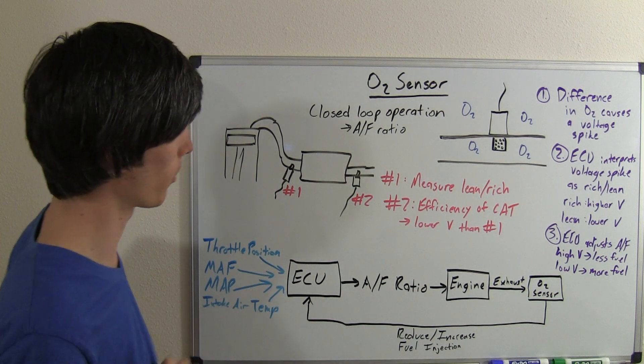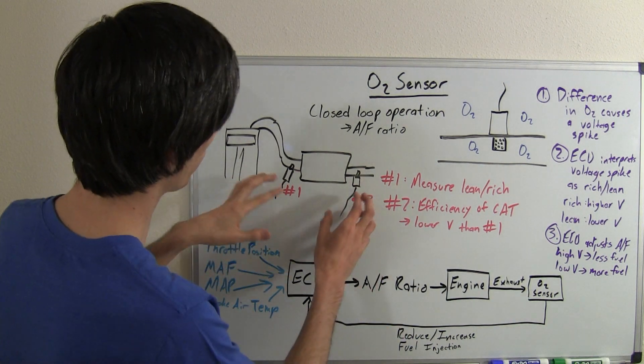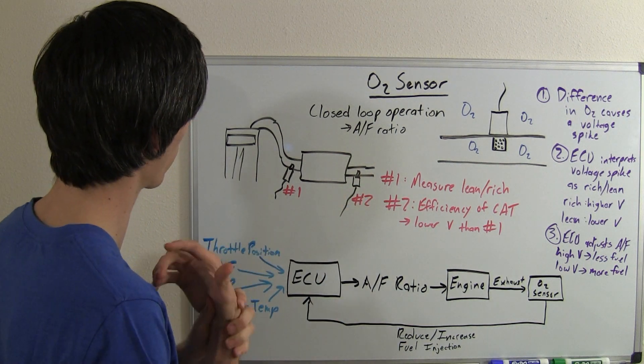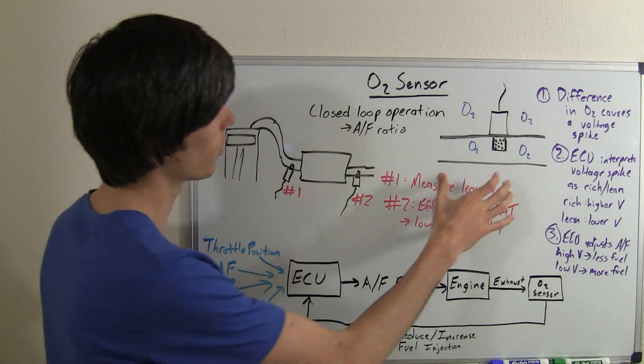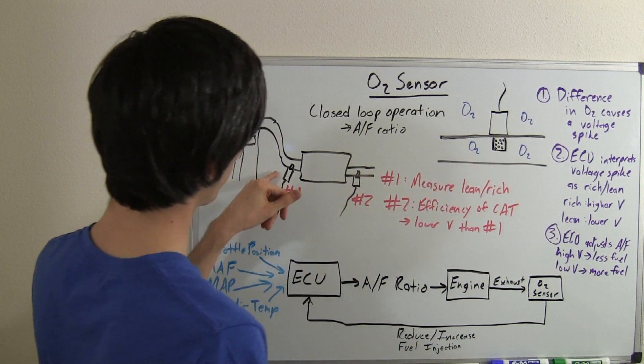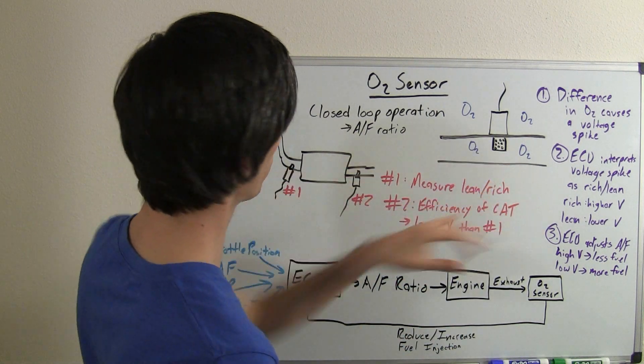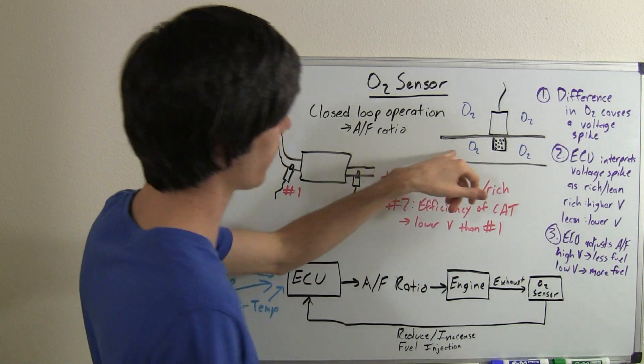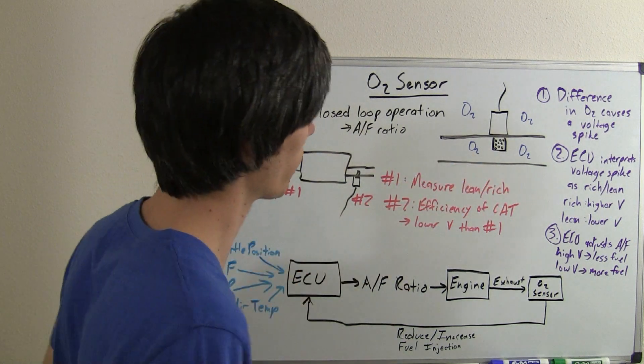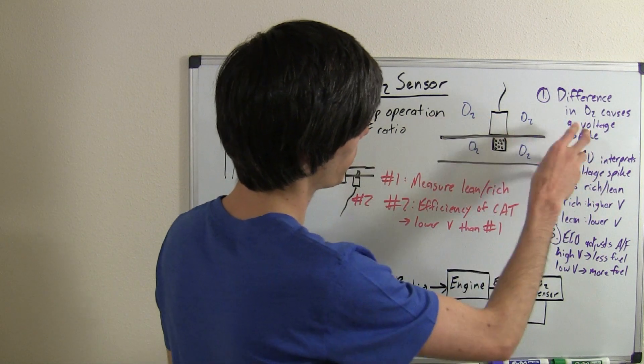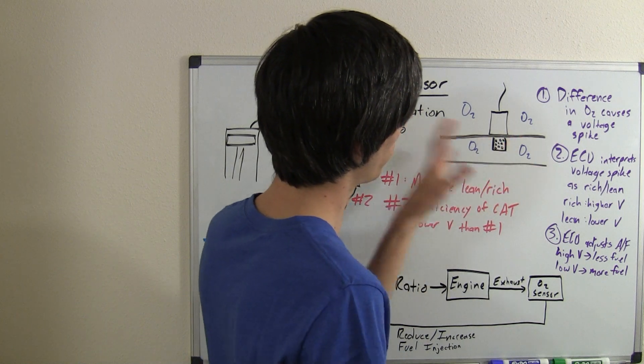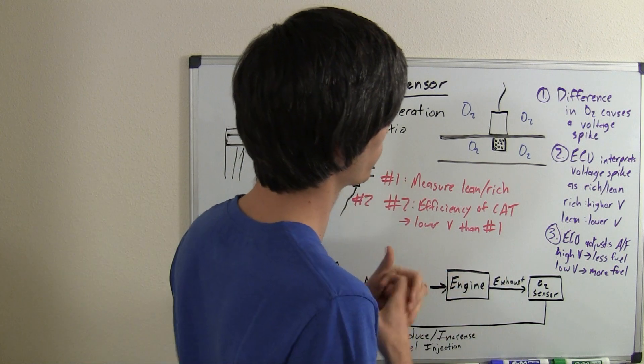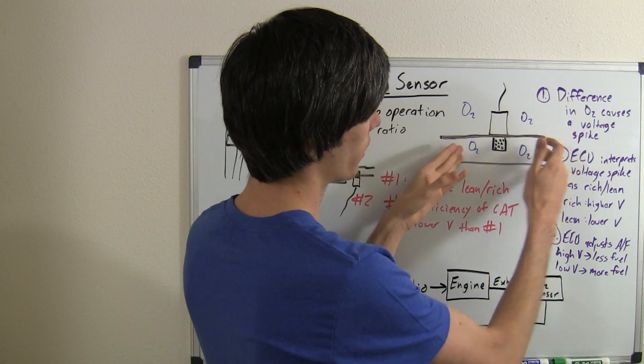So that's the closed loop operation. As I was saying here, you're going to have one before a catalytic converter and one also you could have after a catalytic converter. I'll explain that in a moment. But basically what you've got is this O2 sensor that's right here, it's going to read the oxygen on the outside of the exhaust, so just the atmospheric oxygen, and the oxygen on the inside of the exhaust. As the exhaust passes through the sensor and the oxygen is read by it, it creates a voltage spike if there's a difference in the amount of oxygen on the outside than there is on the inside.